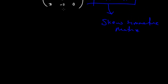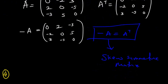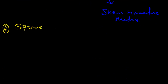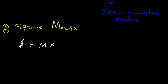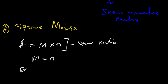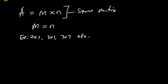Next we look at the square matrix. Just like a square has the same length and breadth, a matrix with an equal number of rows and columns is called a square matrix. If matrix A is an M by N matrix and it is a square matrix, then M must equal N. Examples include 2 by 2, 3 by 3, and 7 by 7 matrices.